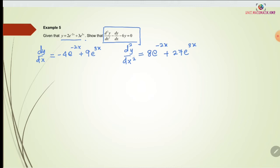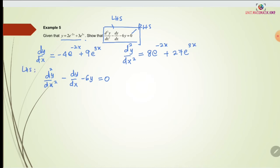This is d²y/dx². Now we need to show d²y/dx² minus dy/dx minus 6y equals 0. The right-hand side equals 0, so we focus only on the left-hand side: d²y/dx² minus dy/dx minus 6y, and we need to make it equal to 0.